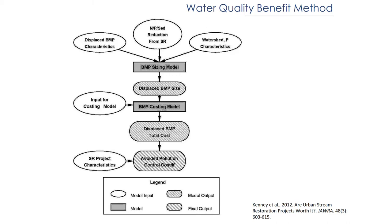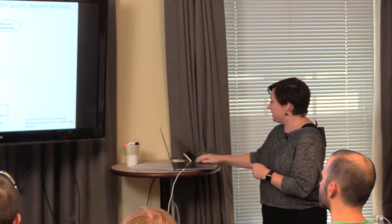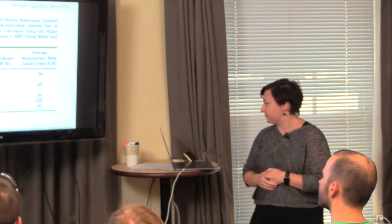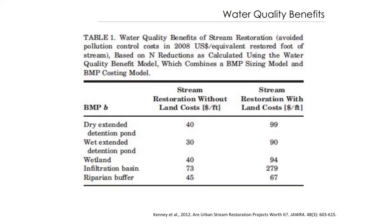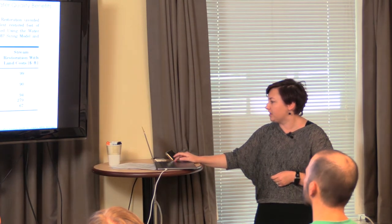You look at stream restoration characteristics, how much nitrogen and phosphorus it would produce, and get a sense of what you'd need as a replacement to achieve the same objective. We looked at a range of different best management practices and made calculations both with land costs and a hypothetical land costs scenario. In general, it's a lot cheaper to do this than some of the stream restoration approaches.